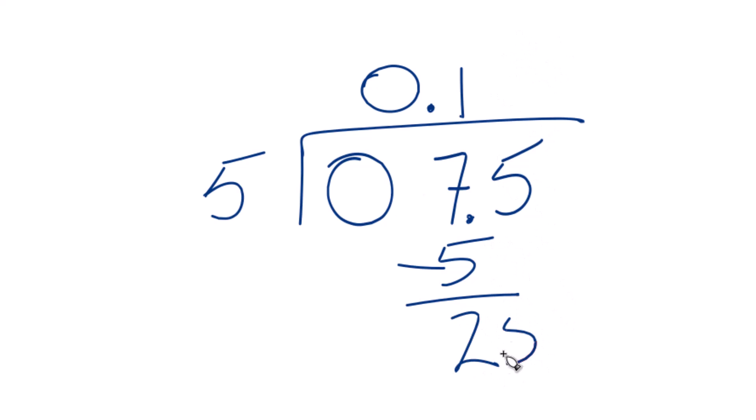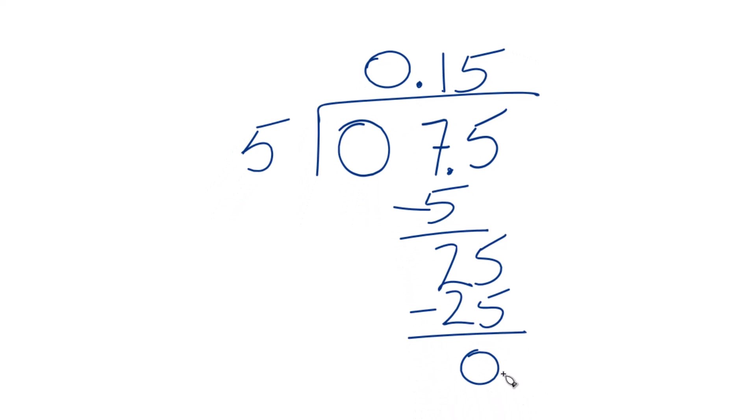We're going to move over 1 here, and 5 times 5, that's 25. Subtract, we get 0. Actually, we're done.